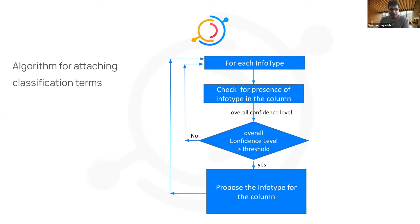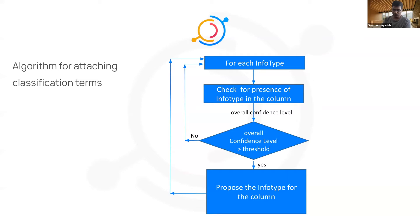Here's a quick description of the algorithm we use to attach info types to columns. The main thing to take away is there is a possibility that we can attach multiple info types to a given column, because you can have JSON snippets and so on. We compute the confidence levels for each info type, and if it's above a certain threshold, then we associate that glossary term with the column — so you could actually end up with multiple glossary terms associated with a column.